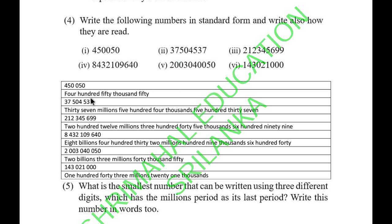Now I'll read them: Four hundred fifty thousand fifty. Thirty-seven million, five hundred four thousand, five hundred thirty-seven. Two hundred twelve million, three hundred forty-five thousand, six hundred ninety-nine.